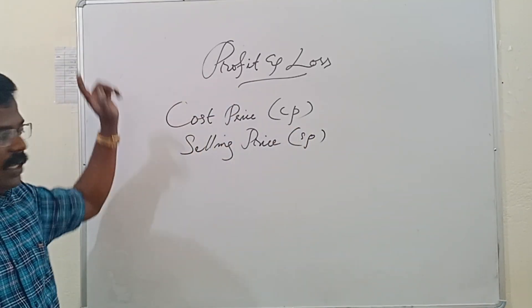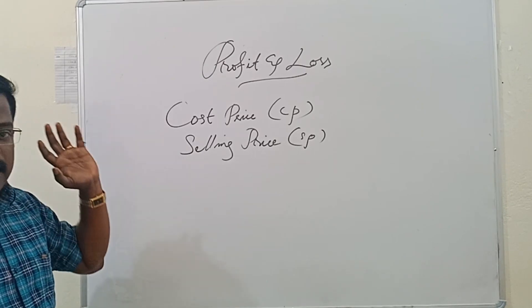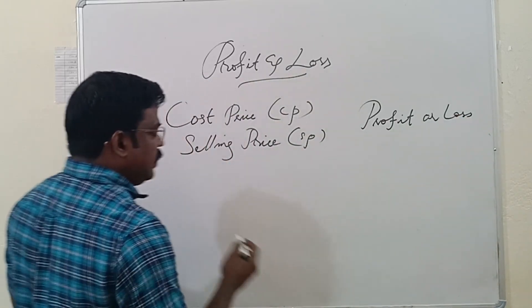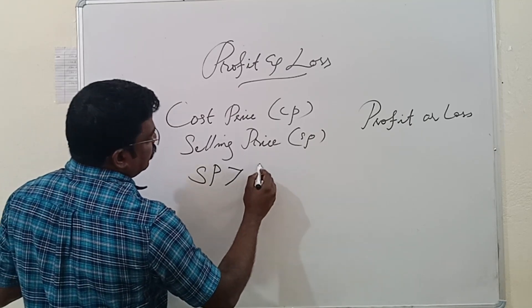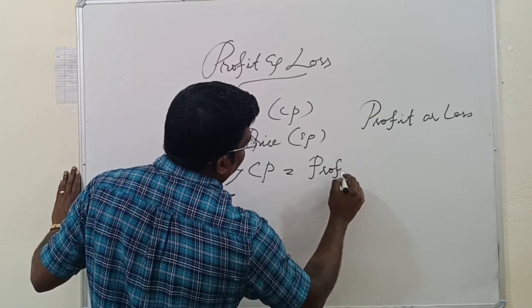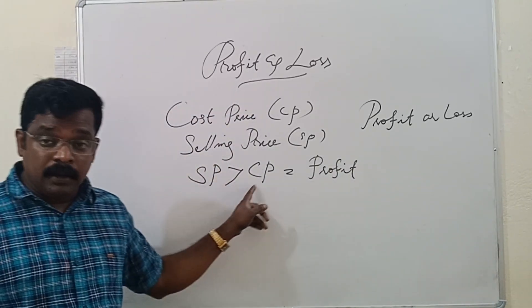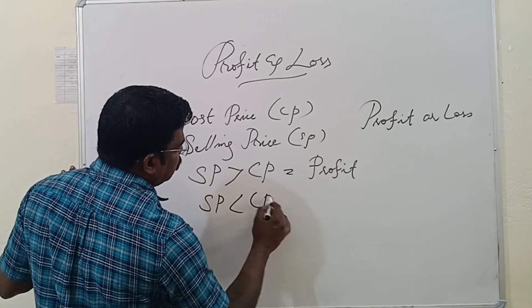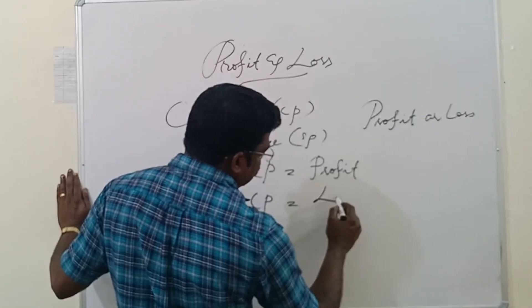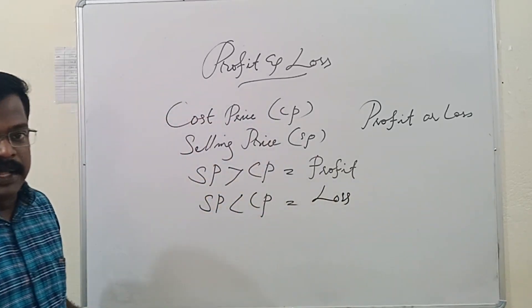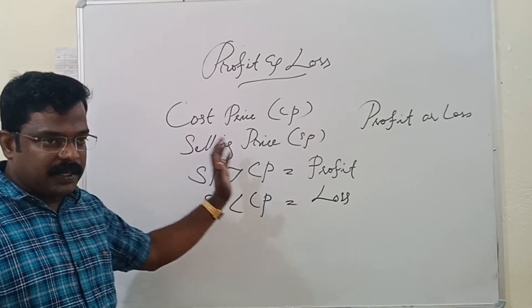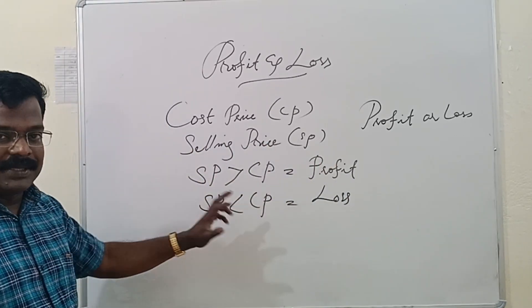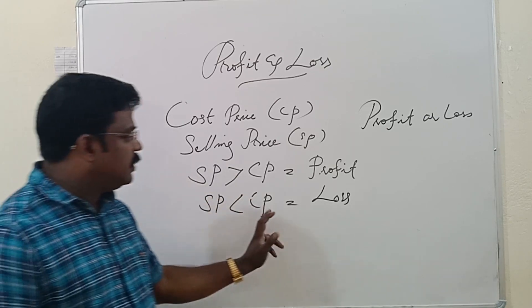The difference between selling price and cost price will decide whether there is a profit or loss. If selling price is greater than cost price, then there is a profit. If selling price is less than cost price, or cost price is greater than selling price, there is a loss. These are the two points you want to remember.